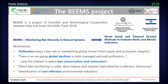BEAMS is the acronym for monitoring bee diversity in natural systems. The idea is to develop novel aerial and classical ground methods, combining them to evaluate biotic and abiotic indicators. Bees are really important — without them it's difficult to survive — but they are also difficult to analyze because they are quite small, and classical methods for analyzing bees and their spaces are time-consuming. We cannot track each bee during its flight.